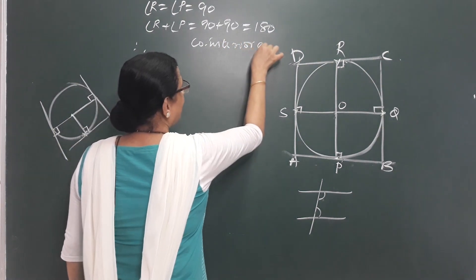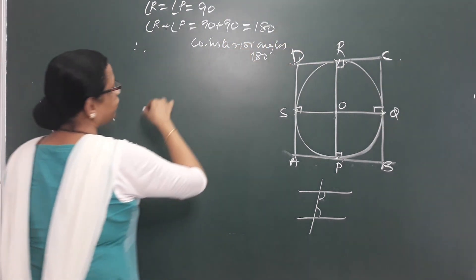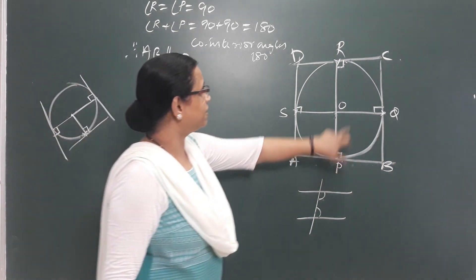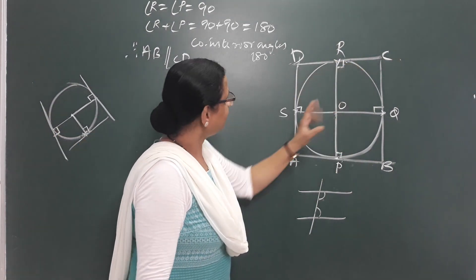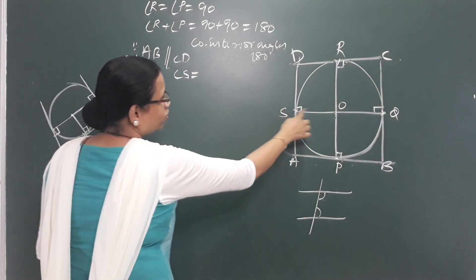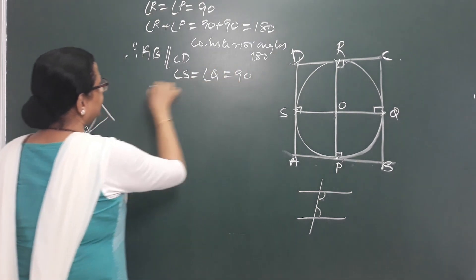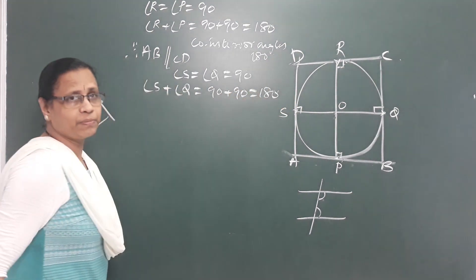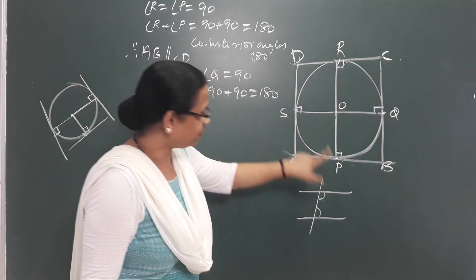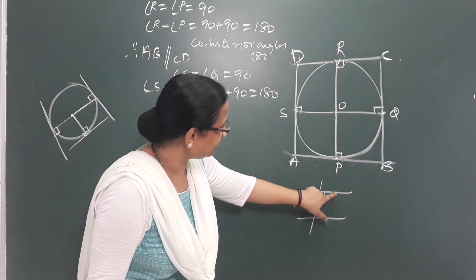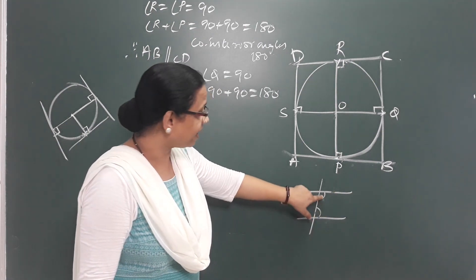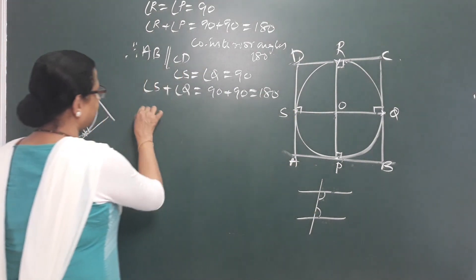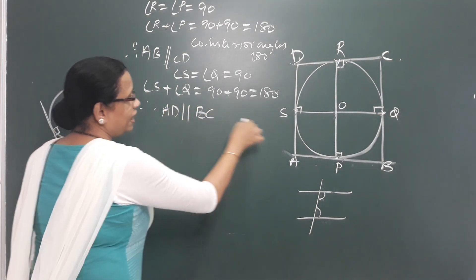Co-interior angles are supplementary, that means 180 degrees. Therefore, we say AB is parallel to CD. Similarly, angle S equals 90 degrees and angle Q equals 90 degrees, so angle S plus angle Q equals 90 plus 90 equals 180 degrees. These two lines are also parallel. Supplementary angles mean parallel lines, therefore AD is parallel to BC.